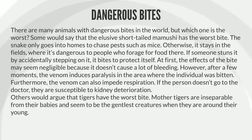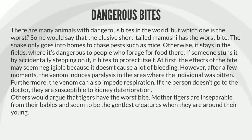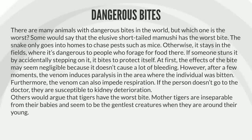There are many animals with dangerous bites in the world, but which one is the worst? Some would say that the elusive short-tailed mamushi has the worst bite. The snake only goes into homes to chase pests such as mice. Otherwise, it stays in the fields where it's dangerous to people who forage for food there. If someone stuns it by accidentally stepping on it, it bites to protect itself. At first, the effects of the bite may seem negligible because it doesn't cause a lot of bleeding. However, after a few moments, the venom induces paralysis in the area where the individual was bitten.